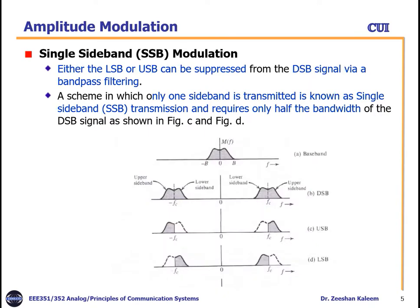In single sideband modulation, either the lower or upper sideband can be suppressed from the double sideband signal via band-pass filtering. The main concept is that first a double sideband signal is generated. Look at the figure — this is the baseband message signal which we need to transmit using SSB, so we first generate the double sideband signal which has both upper and lower sidebands.